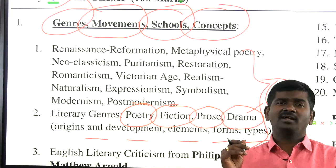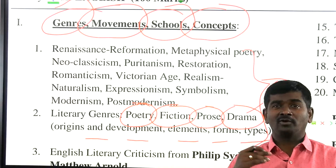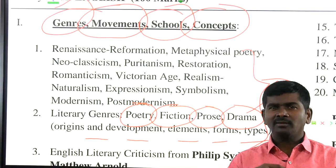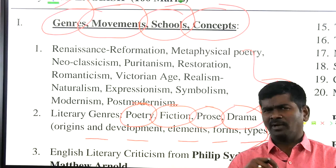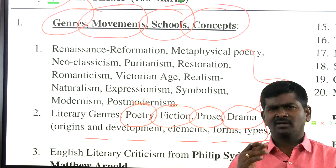Comedy types: romantic comedy, sentimental comedy, comedy of humours, comedy of manners, anti-sentimental comedy, farce, high comedy, low comedy, theatre of absurd, social comedy. Theatre of absurd is coined by whom? Comedy of manners was popularized by whom? Ben Jonson popularized comedy of humours — what are the four humours? Blood, phlegm, choler, melancholy.